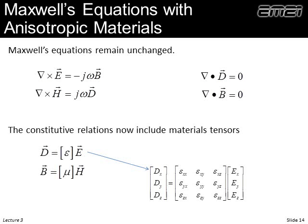Maxwell's equations themselves are unchanged for anisotropic media. The anisotropy enters only through the constitutive relations: D equals epsilon times E, and B equals mu times H, where both permittivity and permeability become three-by-three tensors. An H field in one direction can produce a B field in a different direction if permeability is anisotropic. It is very handy that Maxwell's equations have not changed — it's just the constitutive relations that now have tensors instead of scalars.